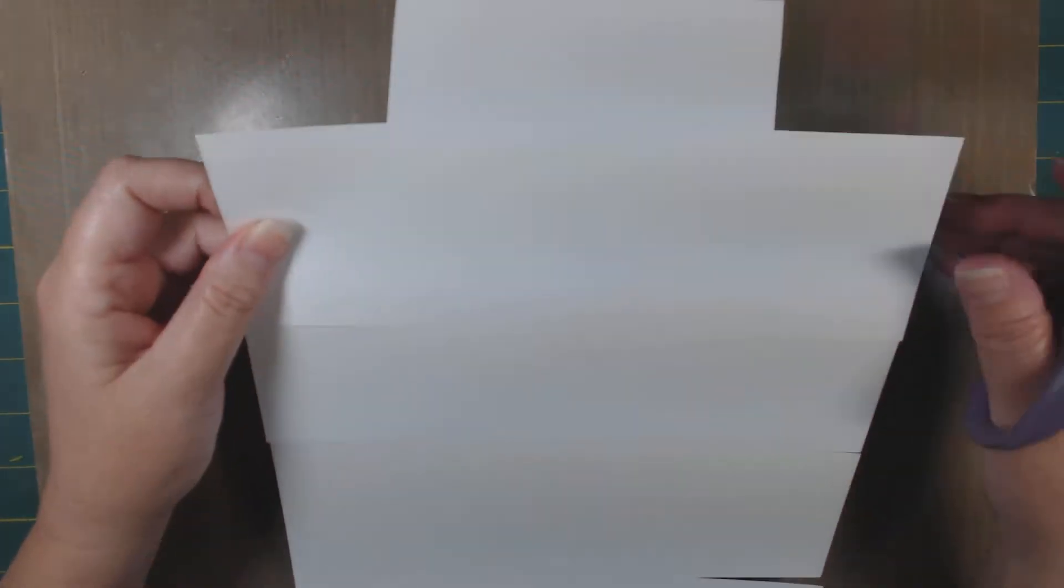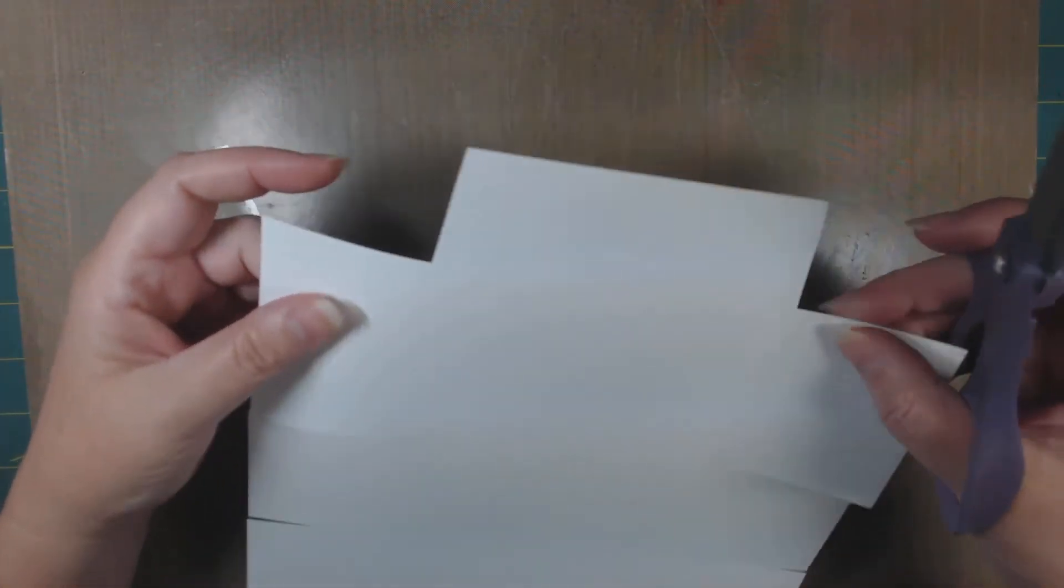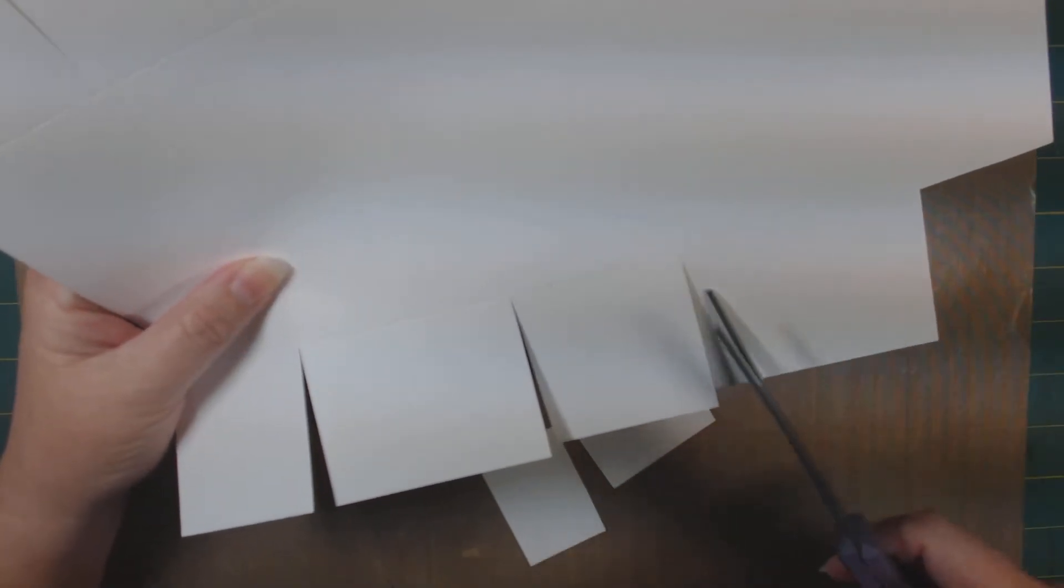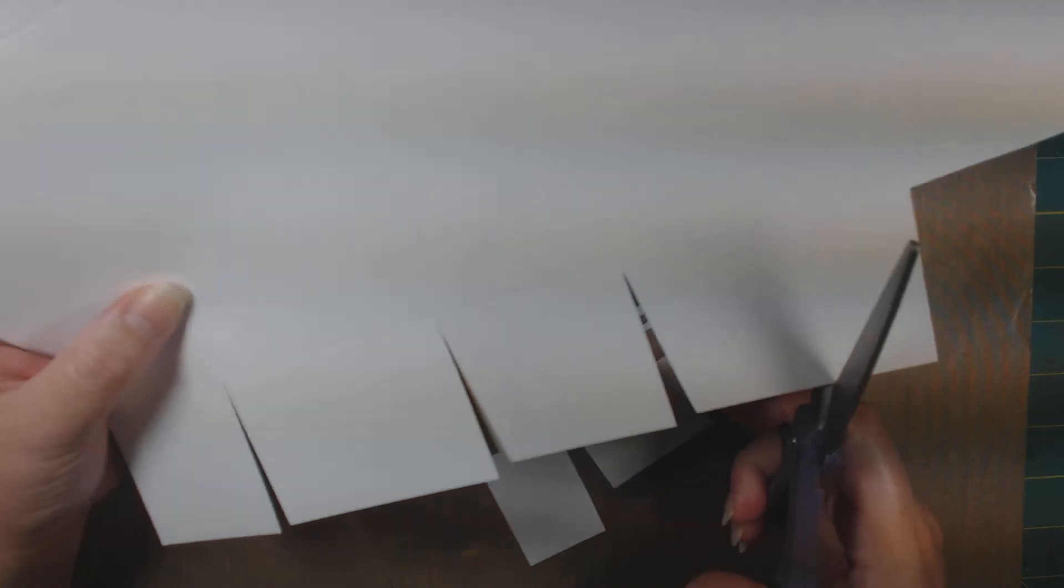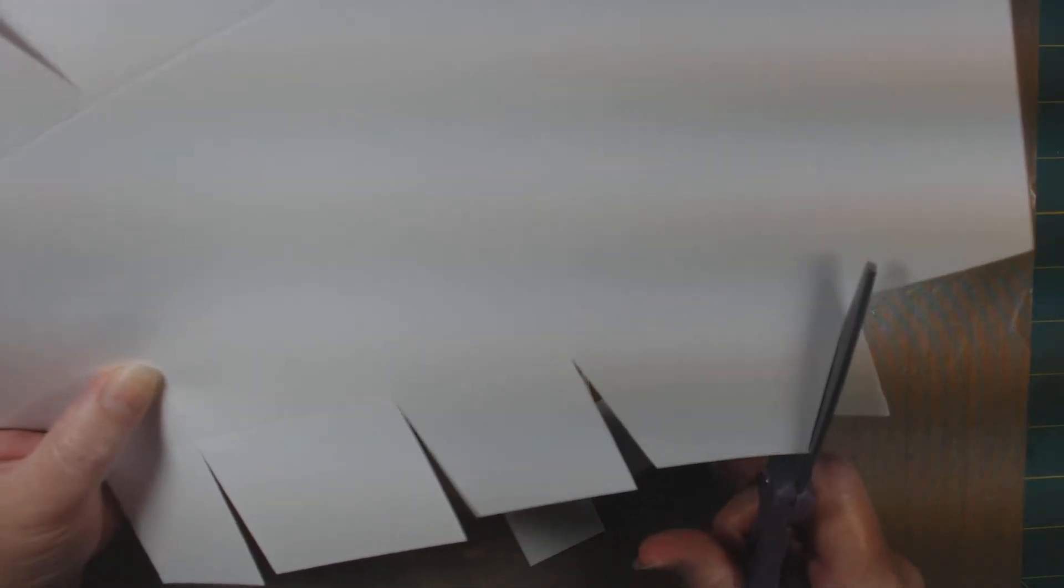So then on these two flaps up here, closest to the flap for the front, these two are the pieces that are going to fold inside of your box. So we want to miter this bottom piece right here just a little bit in, just like that. And then this one, we're going to want to miter it in quite a bit because we want it to be able to slide right into the box real easy.